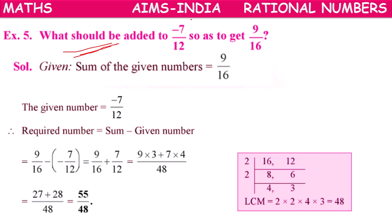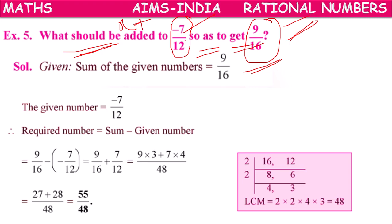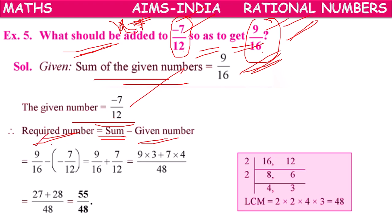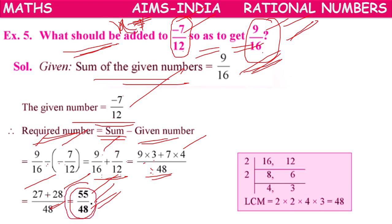Next: what should be added to -7/12 to get 9/16? Let x be the unknown. Then -7/12 + x = 9/16, so x = 9/16 - (-7/12) = 9/16 + 7/12. LCM of 16 and 12 is 48. (9×3 + 7×4)/48 = (27 + 28)/48 = 55/48. This is the required number.